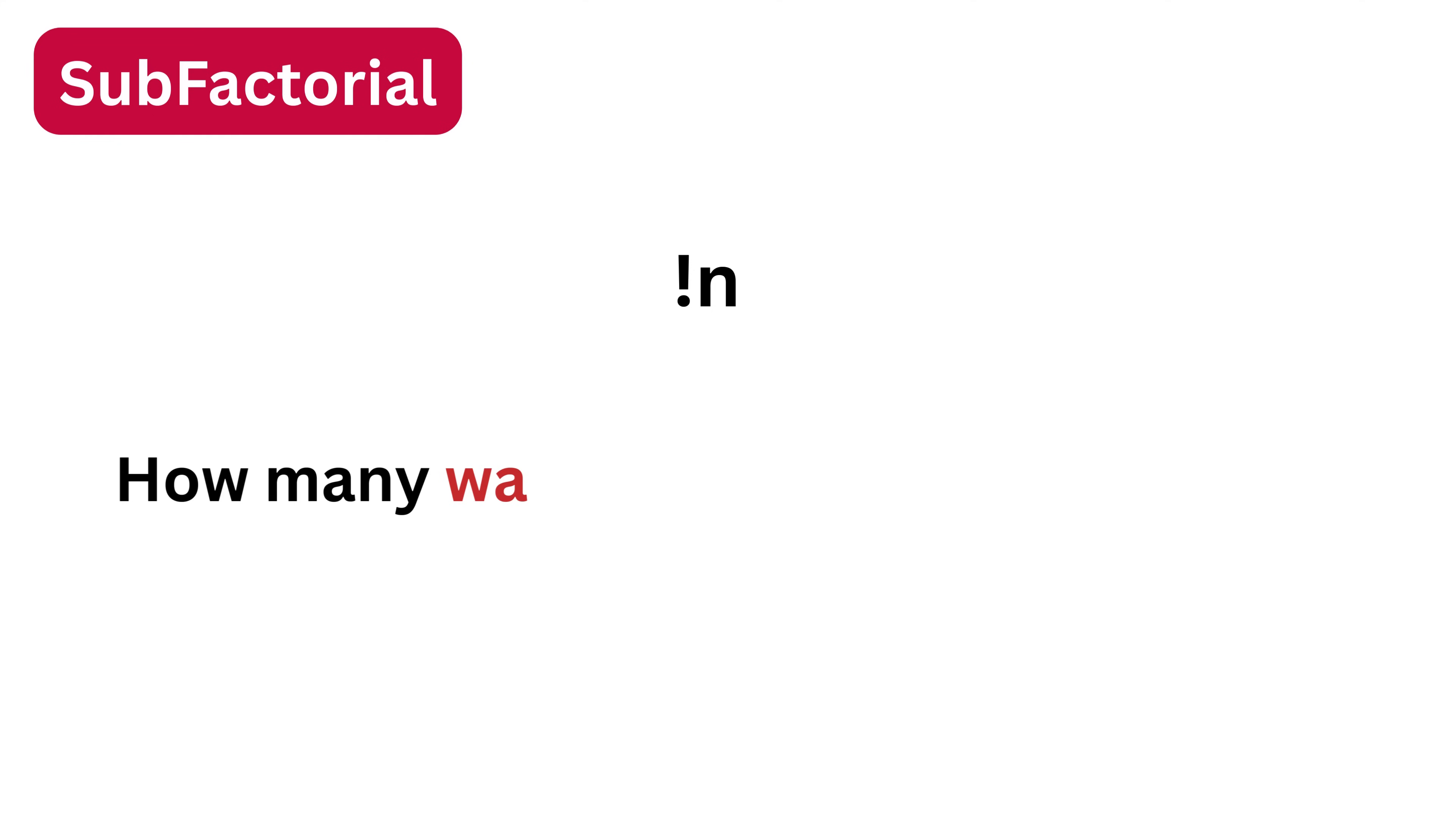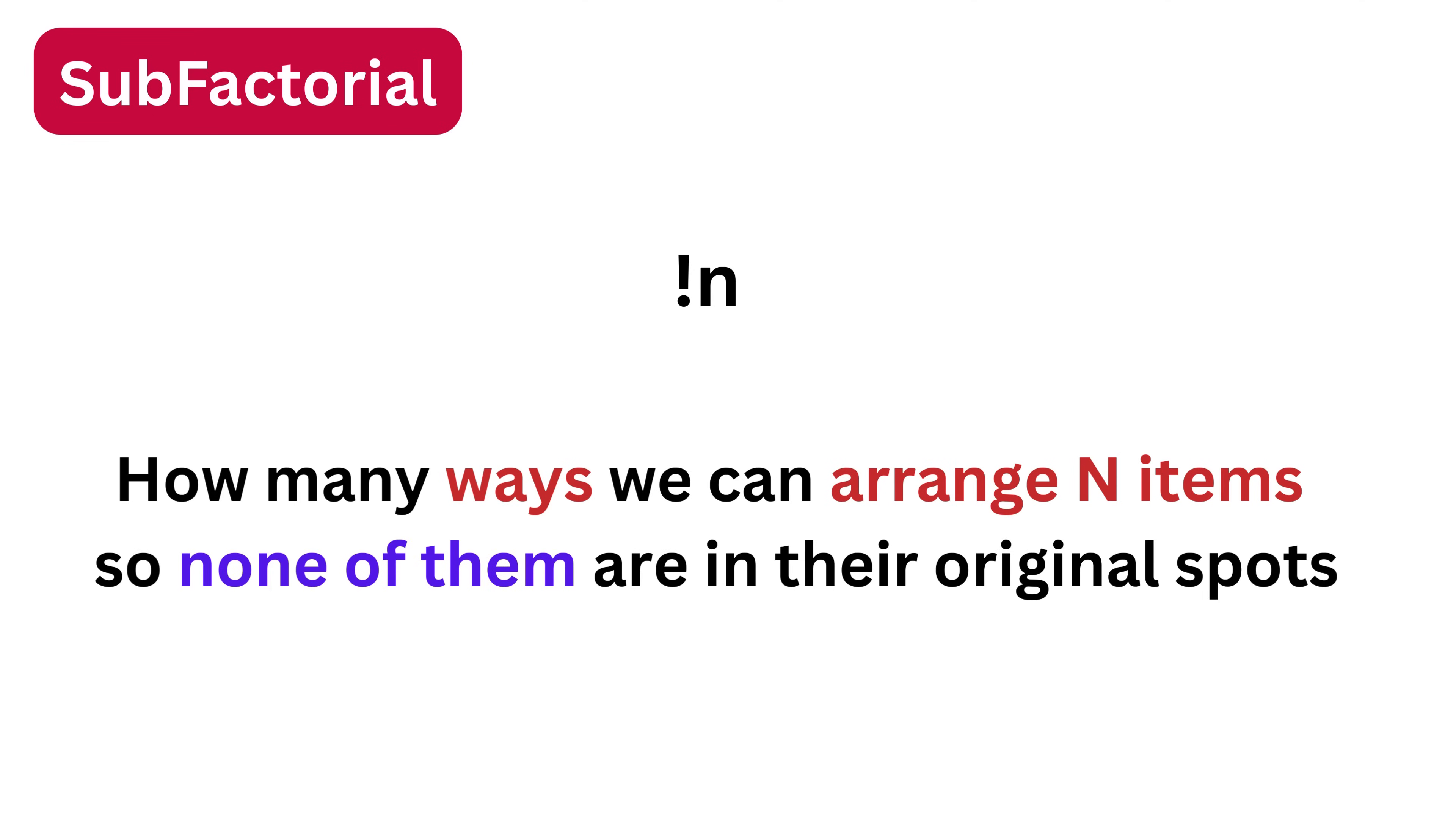This is called a subfactorial, which counts how many ways we can arrange n items so none of them are in their original spots. Like, suppose we have three letters A, B, and C like this.